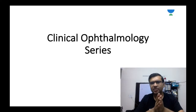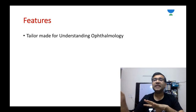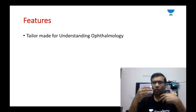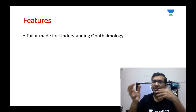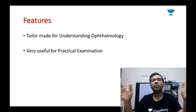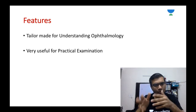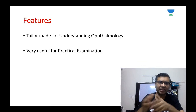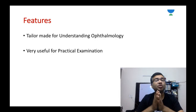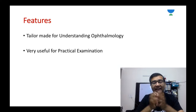This series will be tailor-made for understanding ophthalmology — not only for third year students but also for interns, optometrists, and any ophthalmologist who wants to review the key points of examining a patient with eye disease. It will be very useful for practical examinations. Whenever you go for a practical exam, you have a short case, a long case, and an instrument viva. We will cover short cases like pterygium, ectropion, and entropion, as well as long cases like retinal detachment and cataract — including what to present and what viva questions to expect.